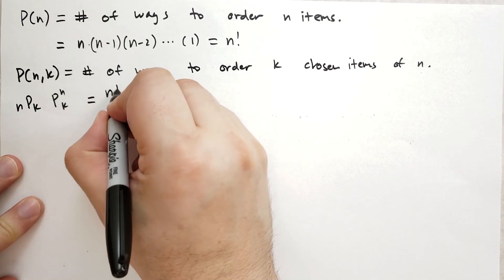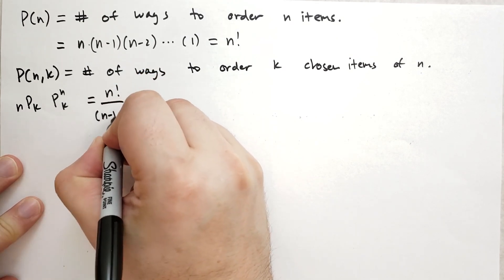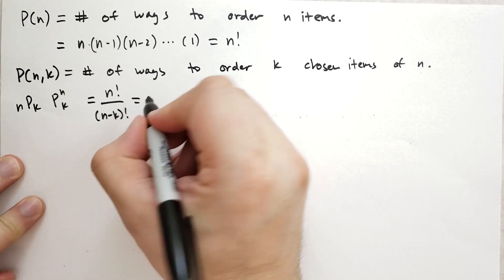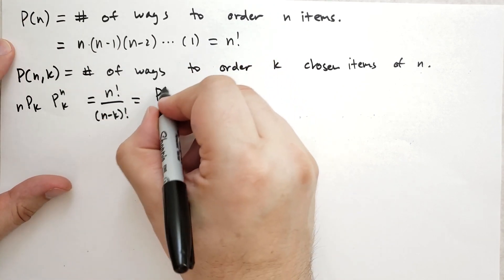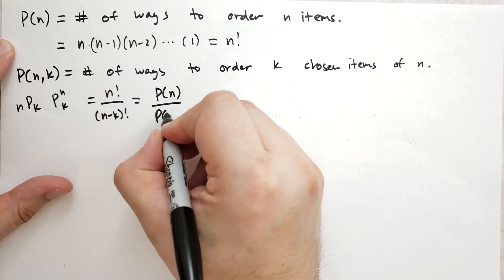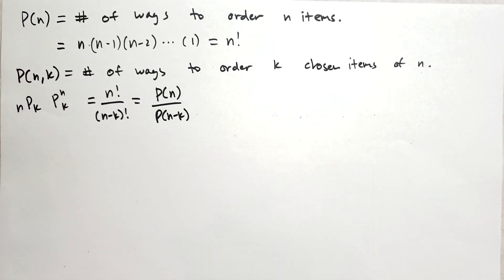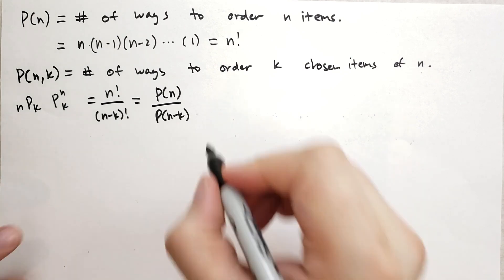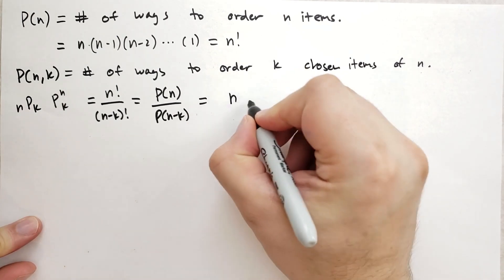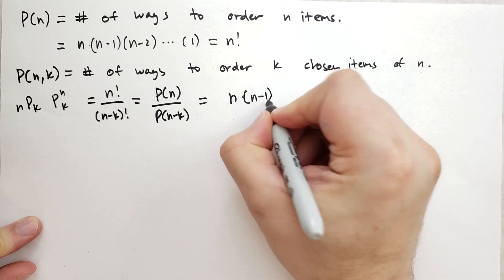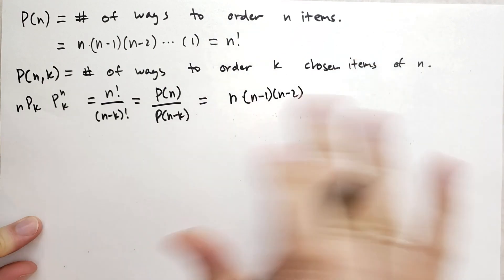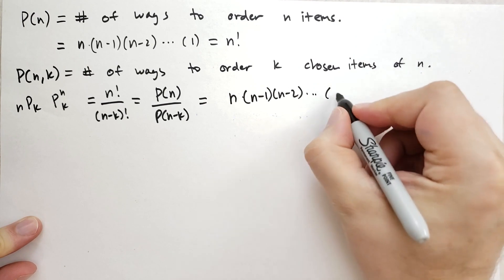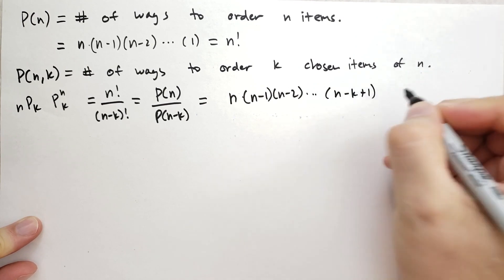And the formula for this, this is going to be N factorial all over N minus K factorial, which we can translate back to this. This is basically P of N over P of N minus K. What is going on here? Why is it working this way? Well, one way to think of this is this is the same as starting at N and then multiplying by N minus 1 and N minus 2. So you're choosing items basically, and you keep going until you get to N minus K plus 1.